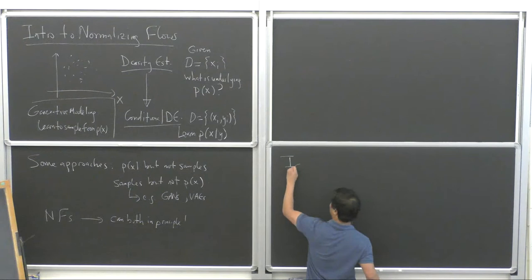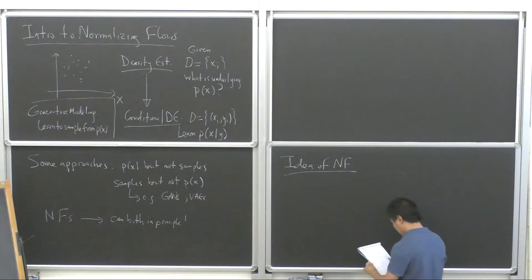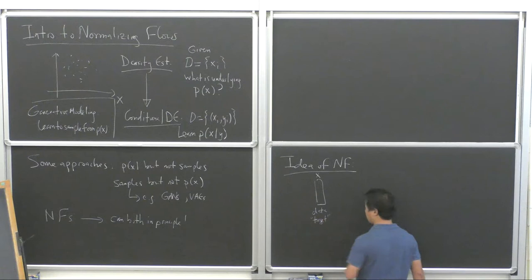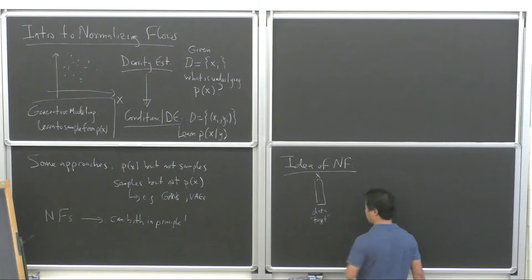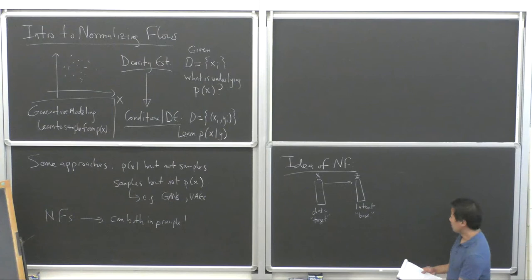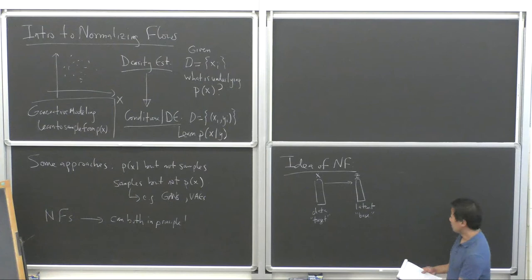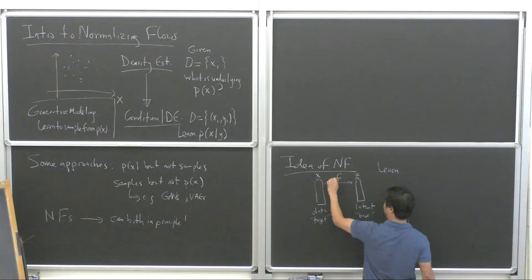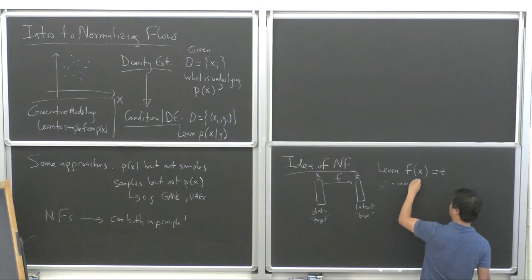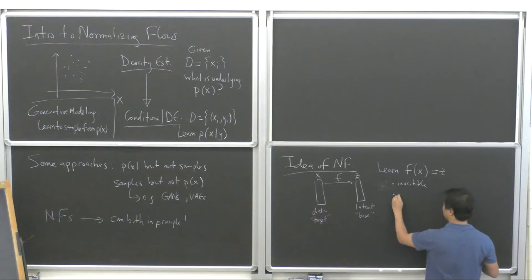So what's the idea of a normalizing flow? It's to learn a transformation between the data — which we'll sometimes refer to as the target space — to a latent space. We'll refer to the data distribution as the target distribution, and the latent space distribution as the base distribution.